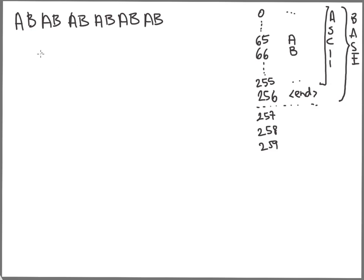What we are going to do is: for every step, we take the longest symbol we find in our dictionary, and always add one element inside the dictionary. The first symbol is an A. We don't have AB in the dictionary, because the dynamic part is still empty. So we emit the code for A, that is 65. Then we add a new entry: the next time we find A followed by B — our look-ahead character — we want this combination in the dictionary.